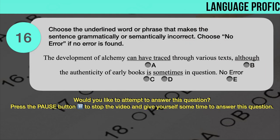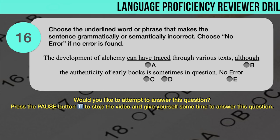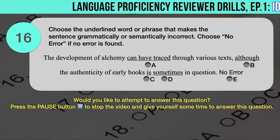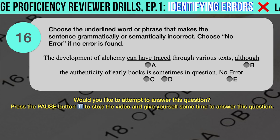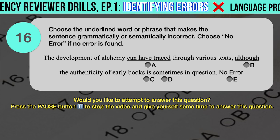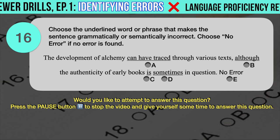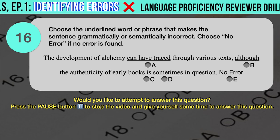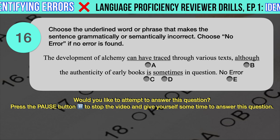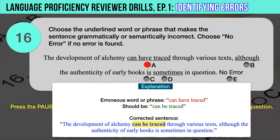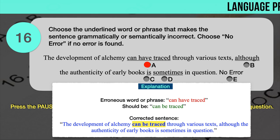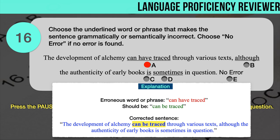Drill question number 16. 'The development of alchemy can have traced through various texts. Although the authenticity of early books is sometimes in question.' The underlined words are: A. Can have traced, B. Although, C. Is, D. Sometimes. The correct answer is A. 'Can have traced' should have been 'can be traced.' Correct sentence: The development of alchemy can be traced through various texts. Although the authenticity of early books is sometimes in question.